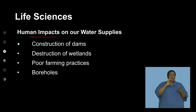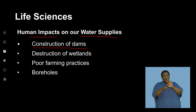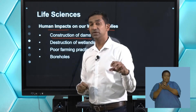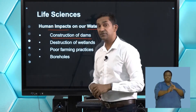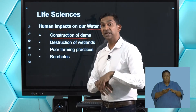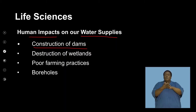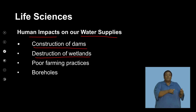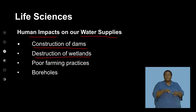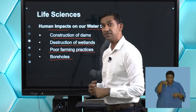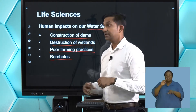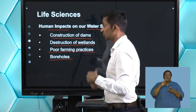When we consider human impacts on the water supply, dams have advantages and disadvantages — they are constructed to contain water and form reservoirs for people to access. There is also the destruction of wetlands, which serve as sponges that absorb water and return it back into the water table, making it available to soil water that other plants and organisms can access. Boreholes tap into groundwater, and farming practices that are not efficient in terms of water conservation also contribute to these impacts.